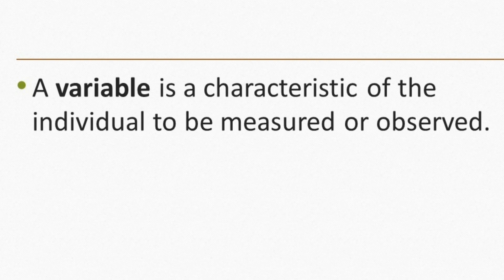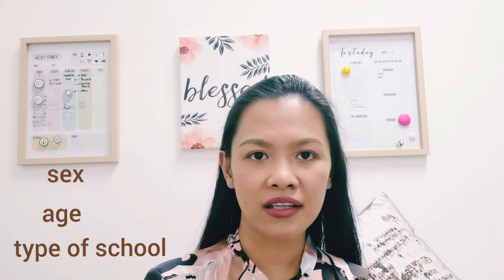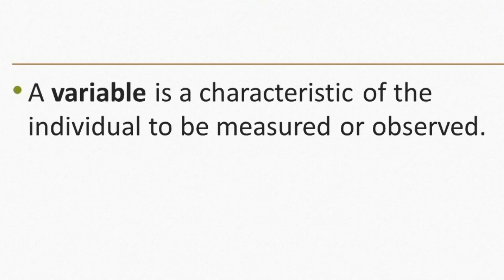Variable is one of the common terms that we use in this course. A variable is a characteristic of the individual to be measured or observed. If I ask you to describe your students, what are their characteristics? You may say, for example, that the students may be described by their sex, age, or the high school where they graduated from. All of these are examples of variables — characteristics of individuals.